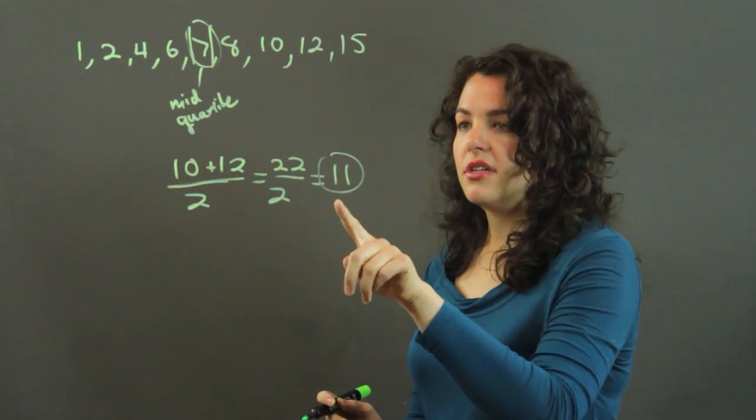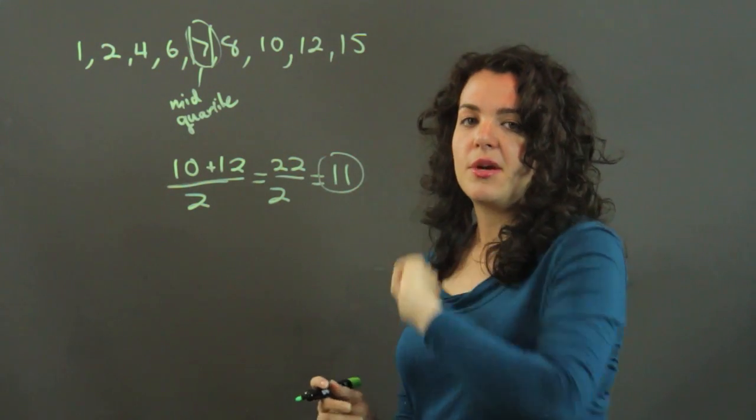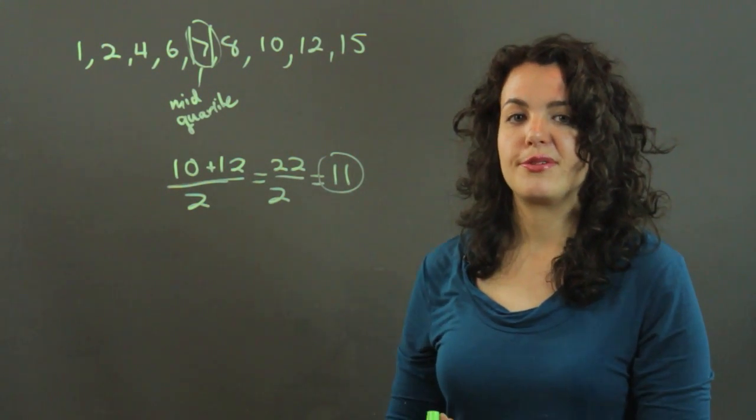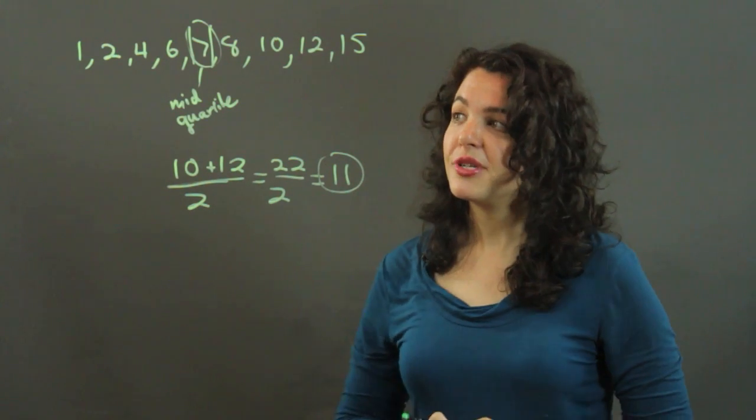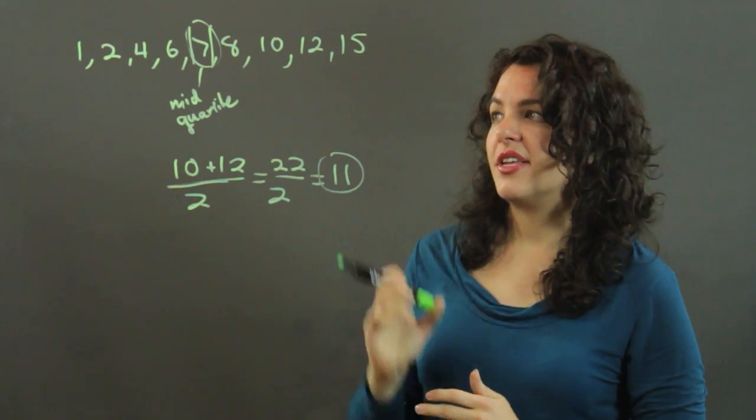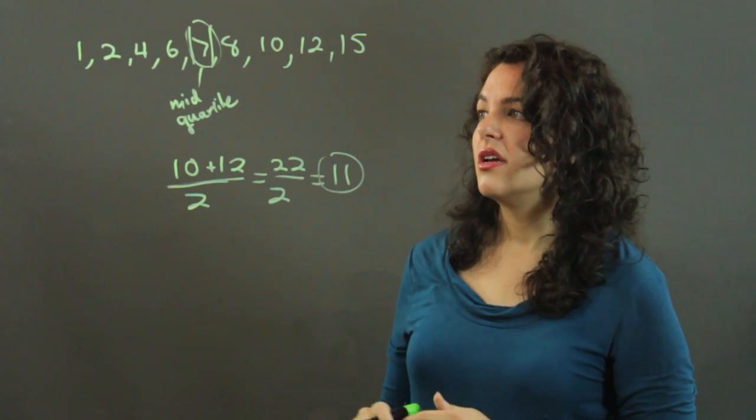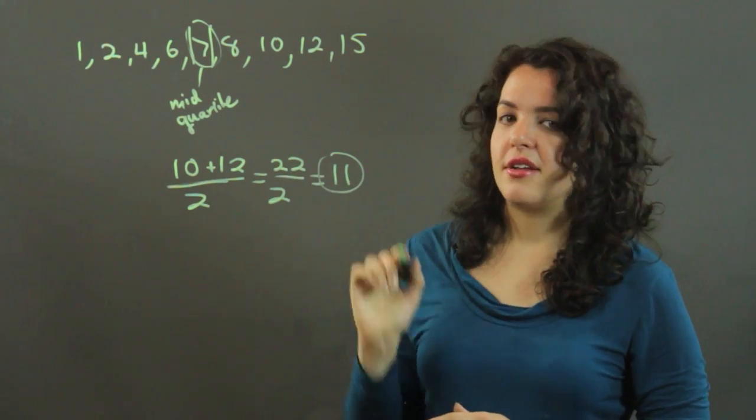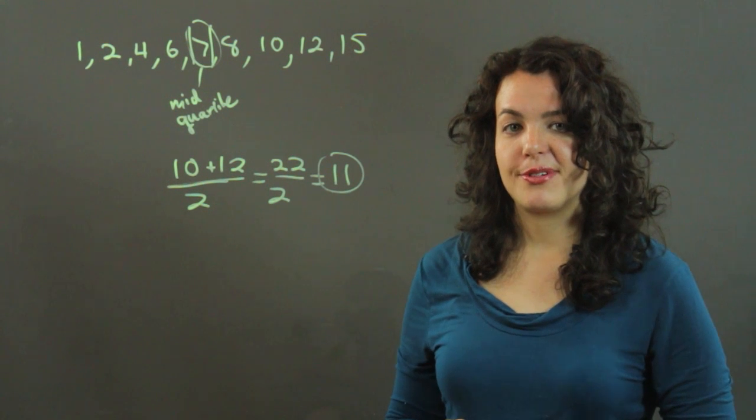So there you have it, 11 is the upper quartile of this set of numbers. So my name is Julia, and I just showed you how to find the upper quartile using both median and the mean in a set of numbers. Thank you.